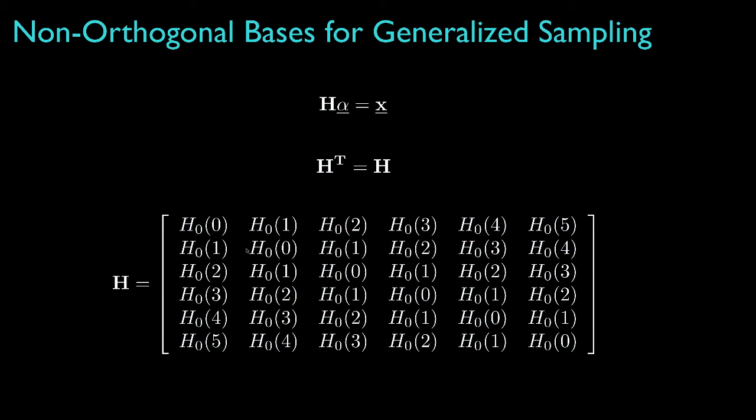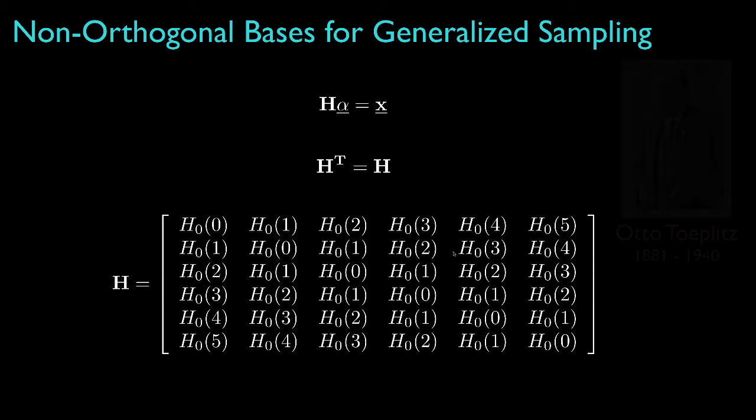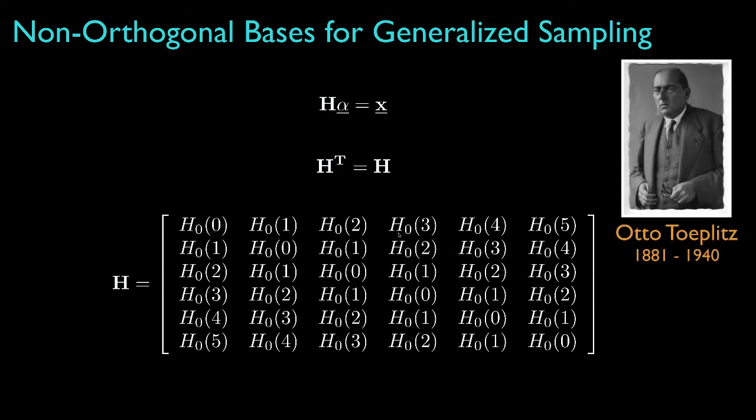The generic notation I'm using for these elements shows that there might be some fundamental function H sub 0 that describes these values as a function of the absolute difference between the row and column indices in the matrix. The main diagonal has no difference between row and column indices, whereas the first off-diagonal has a difference of 1, the second a difference of 2, the third a difference of 3, and so on. A matrix that has this property is called a symmetric Toeplitz matrix, and symmetric Toeplitz matrices are very important for computational science and engineering.